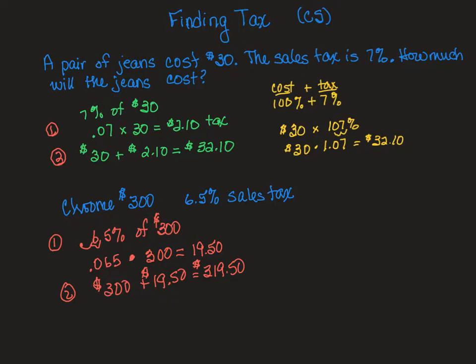On the other side, I'm going to show how I would do it the other way. So I remember if I have the cost, I'm going to pay for the Chromebook, but I am going to also pay for the tax. So if I have a hundred percent of the Chromebook plus 6.5% tax altogether,